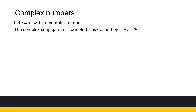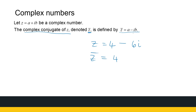One more definition — and this is something new that doesn't have a direct equivalent in the real numbers. It's called the complex conjugate. If Z equals A plus iB, the complex conjugate of Z, denoted Z with a bar on top, is defined as A minus iB. So if Z is 4 minus 6i, the complex conjugate is 4 plus 6i — we change the sign of the imaginary component.